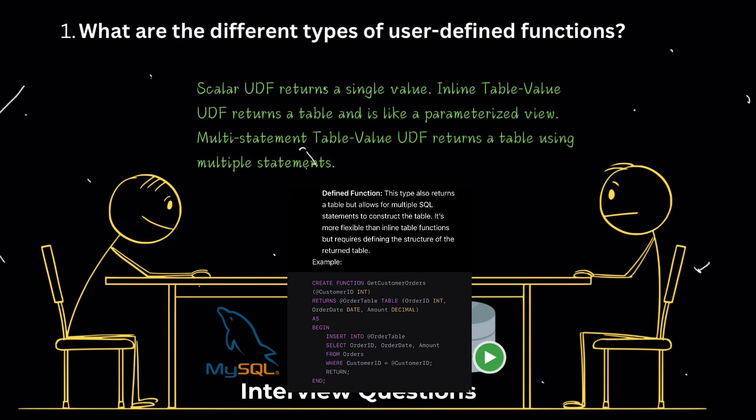Inline table value user-defined function. This type returns a table and is similar to a view but with parameters. It's useful when you need a parameterized, read-only view of the data.